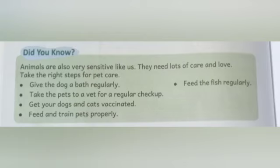These are the steps for pet care. Give the dog a bath regularly. Take the pets to a vet for a regular checkup. Get your dogs and cats vaccinated. Feed and train pets properly. Feed the fish regularly. Agar aapke paas pet dog hai ya cat hai, toh aapne kya karna hai? Aapne regular bath dena hai, aur regular checkup ke liye vet ke paas leke jaana hai. Vet woh hota hai jo animals ka doctor hota hai. Aur dogs aur cats ko proper vaccination bhi deni hai aur unhe proper feed deni hai.